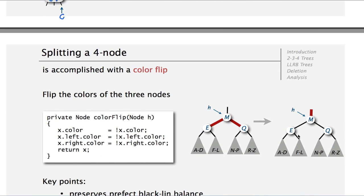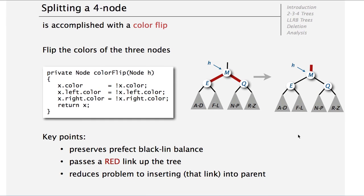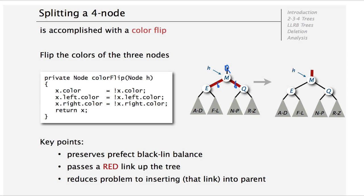So now about splitting a 4-node. Splitting a 4-node is actually a very simple operation. We don't need to do much. All we need to do is, here is a 4-node. And what we do is, we make this black, this black, and this red. So after we split, we have now a red edge coming up from this 4-node.